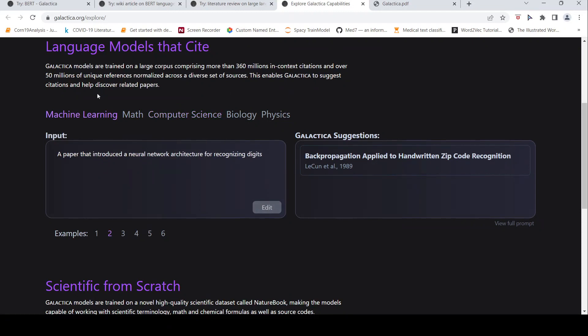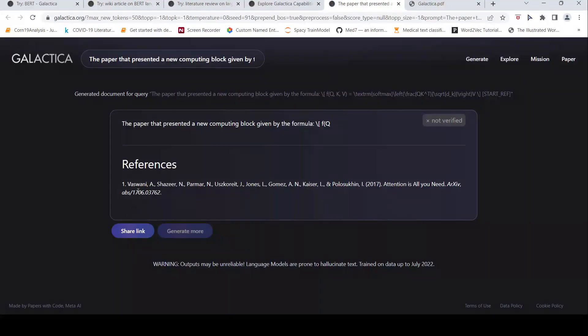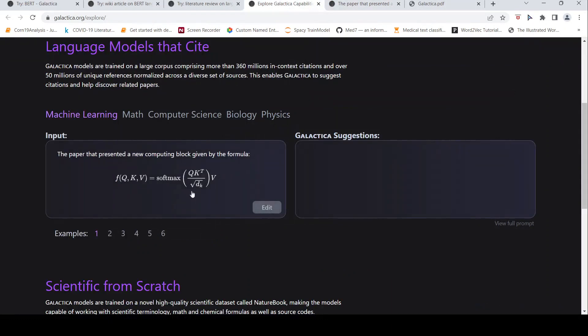It helps Galactica to suggest citations and help discover related papers because it has been trained on a large corpus comprising more than 360 million in-context citations and over 50 million of unique references. So for example, a deep learning paper, an NLP paper that compares different ways of encoding positions. And what is this? This is the paper that represented a new computing block given by the formula. It doesn't give the result over here. But when I click this view full prompt, it actually says this as reference this paper, which is attention is all you need paper. So you can get that.